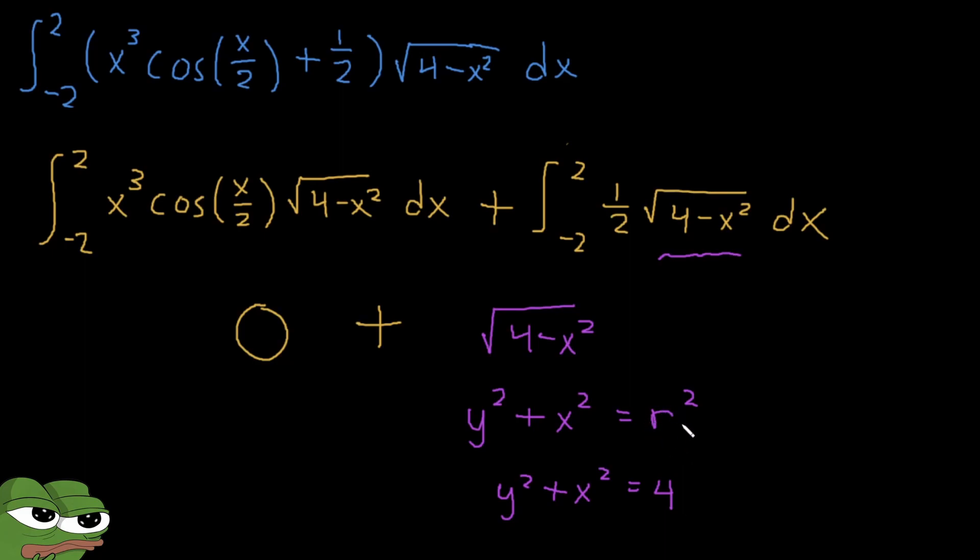So if we isolate our y, this would just be the root of 4 minus x squared, which is exactly what this function is. So if we draw it out, this function is actually just this curve over here. And so when we say that we're integrating that curve from negative 2 to 2, you're actually just getting this area of a semicircle of radius 2.